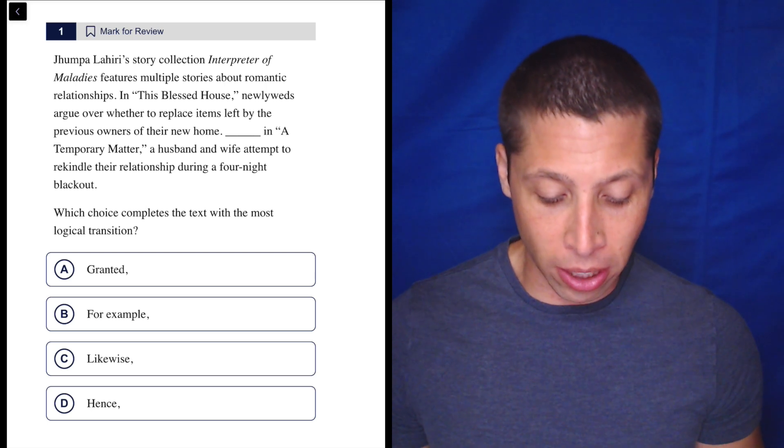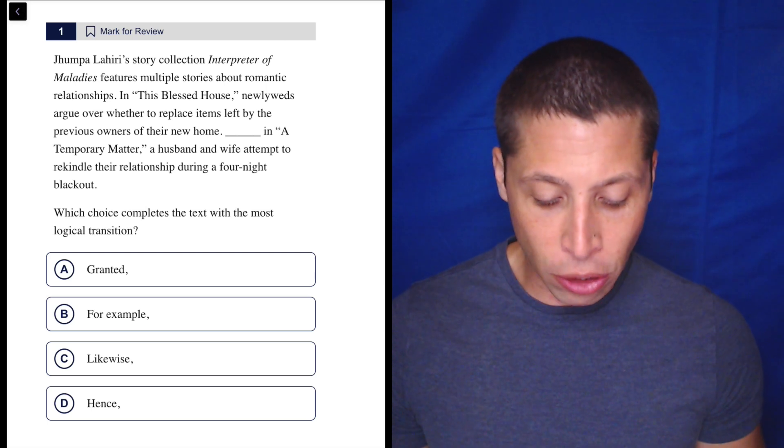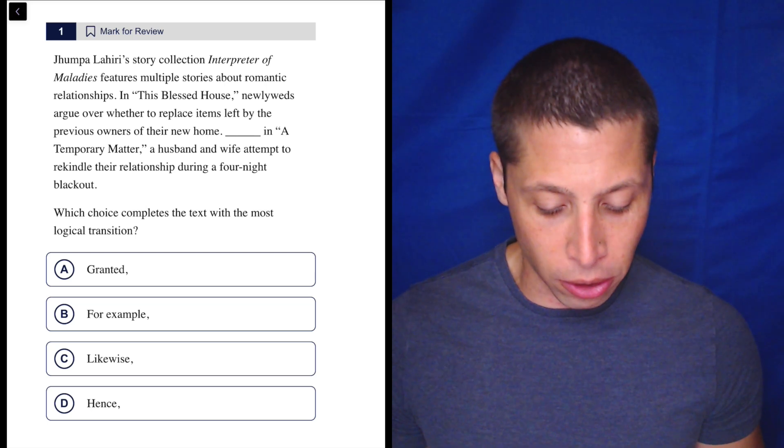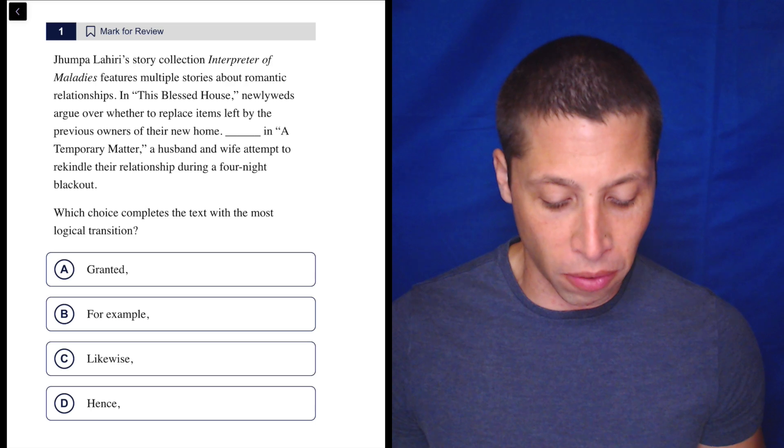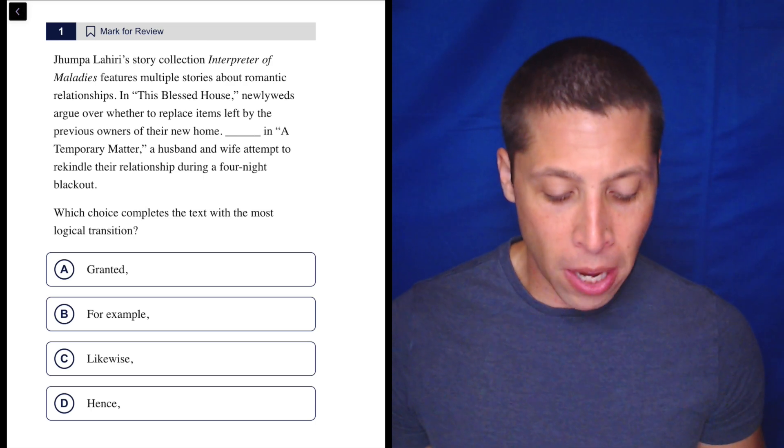Jumpa Lahiri's story collection, Interpreter of Maladies, features multiple stories about romantic relationships. In The Blessed House, newlyweds argue over whether to replace items left by the previous owners of their new home. In a temporary manner, a husband and wife attempt to rekindle the relationship during a four-night blackout.